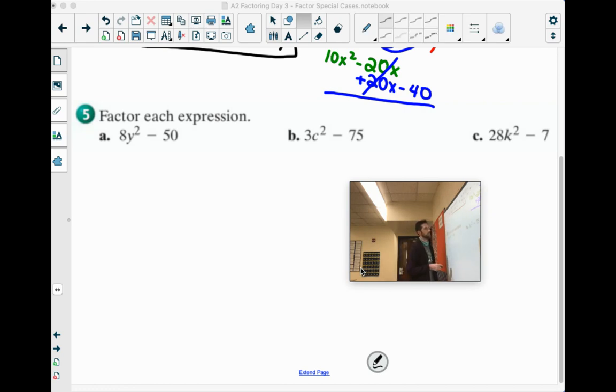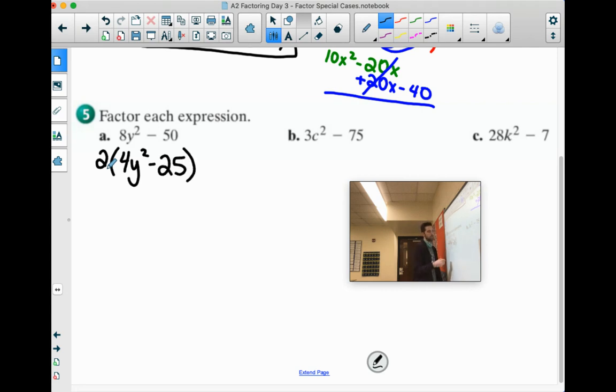8y squared and 50. They're both even. So we could take out a 2. Which leaves us with 4y squared minus 25. Those are both perfect squares. Square root of 4y squared is 2y. Square root of 25 is 5. So 2y plus 5, 2y minus 5.